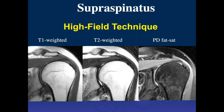On T1 weighted images, the fat within the bones is bright with black cortical margins and gray signal intensity within the soft tissues. On T2, the muscle is a little darker than on T1, while fat continues bright with fast spin echo T2. With PD fat sat, muscle is brighter, tendons stay low in signal intensity, fat is suppressed within the bones, and this highlights a lot of soft tissues. PD fat sat is sensitive for edema syndromes both within bone and soft tissues.